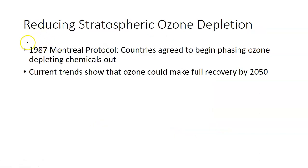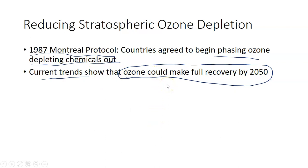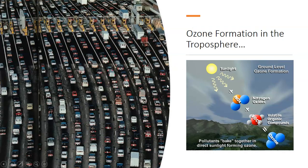Now because of this research done by Molina and Sherwood, those two chemists, in 1987 the Montreal Protocol was introduced. Countries agreed to begin phasing ozone-depleting chemicals out in favor of alternatives. And current trends show that ozone could make a full recovery by 2050 if the trends between 2000 and 2015 continue. So this is one of those examples where countries banded together and actually were able to get something done and have positive impacts as a result.